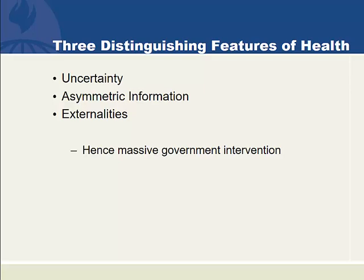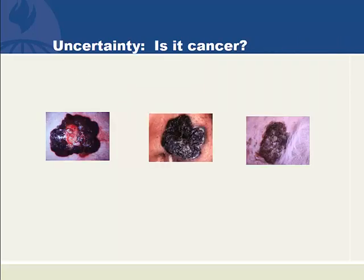First, let's define uncertainty. Many things in health and medicine are uncertain, both to the doctors and to the patients. Take a look at these three skin lesions. Which of them would you look at and say, that's got to be cancer? Both doctors and patients would have some reason to be unsure.